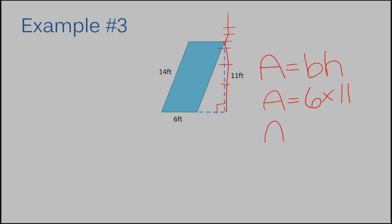So, after we figure out what points we're going to use and we plug them into our formula, we can actually multiply it. So, 6 times 11 is going to be 66.